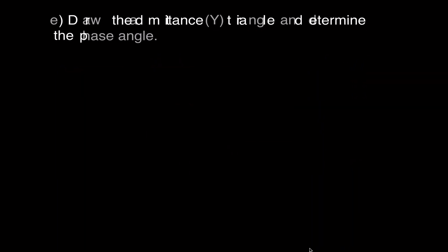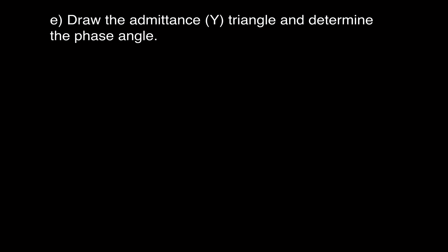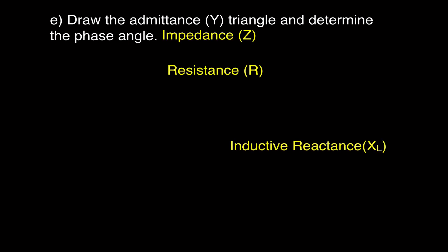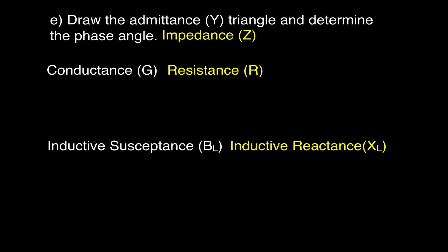Now we're going to get the admittance, the admittance triangle, and calculate the phase angle again — hopefully we'll get 30 degrees. Remember, for series circuits we have impedance, resistance, and inductive reactance. When we have parallel circuits, we use admittance, because that's how much current the circuit admits to flow through it. We use conductance (symbol G) instead of resistance, because that represents how much current is conducted through the resistor branch. And instead of inductive reactance, we say inductive susceptance, because you can think of that as how susceptible that branch or circuit is to changes in current.